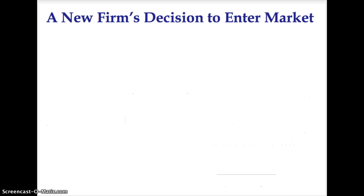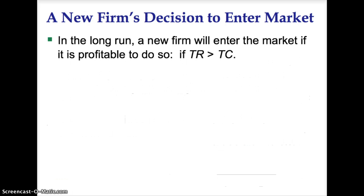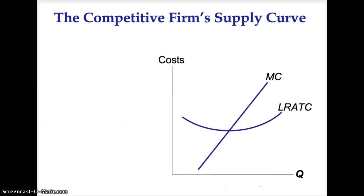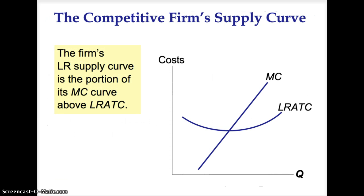Likewise, a new firm can make the decision to enter into a market. In the long run, a new firm will enter the market if it is profitable to do so — if total revenue is greater than total cost. Dividing both sides by quantity, the firm's entry decision is to enter the market if price is greater than average total cost. The firm's long-run supply curve is the portion of the marginal cost curve above the average total cost curve.